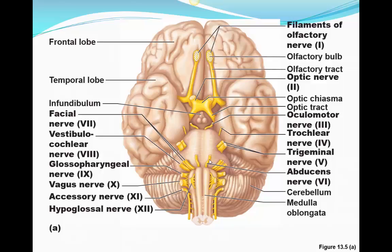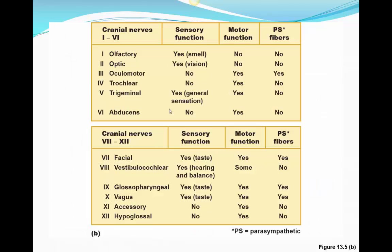Some cranial nerves are purely sensory, some are purely motor, and some are a mixture. That content is from lab and won't be asked again for lecture — all you need to know is that cranial nerves are part of the peripheral nervous system.